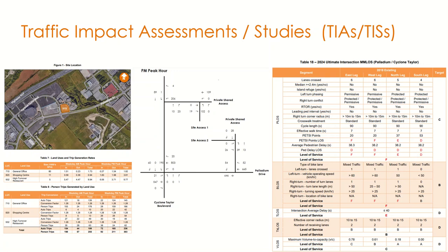The transportation professional then overlays the traffic generated by the development onto the future traffic volumes expected in the surrounding transportation network. To find background traffic, existing traffic volumes are typically grown using a historical growth rate reflecting traffic growth in the study area. Once the post-development traffic is in place — including development-expected traffic and background traffic — the analysis is rerun, and mitigation measures are considered if needed based on any anticipated traffic challenges.